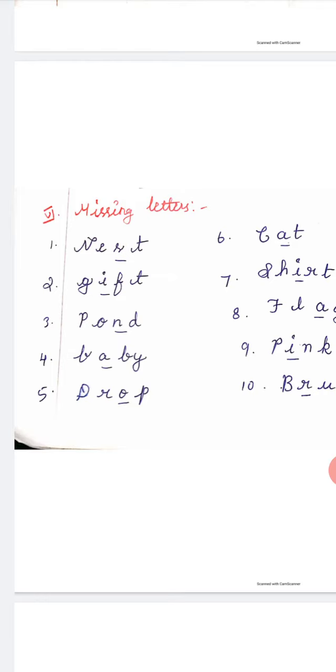N-E-S-T, nest. Second one, gift. G-I-F-T, gift. Third one, pond. P-O-N-D, pond. Fourth one, baby. B-A-B-Y, baby. Fifth one, drop. D-R-O-P, drop.